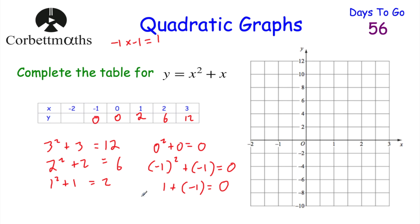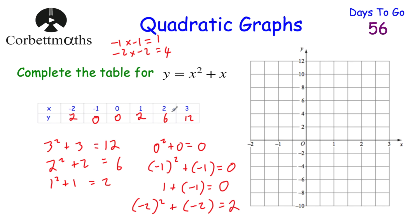For x equals negative 2, we do negative 2 squared plus negative 2. Negative 2 times negative 2 is 4, and then adding negative 2 means going down 2, so 4 minus 2 equals 2. You may notice there's a pattern: 0, 0, 2, 2, 6, 6, 12, 12. That's not always the case with quadratic graphs, but when it happens it's reassuring you've got it right.